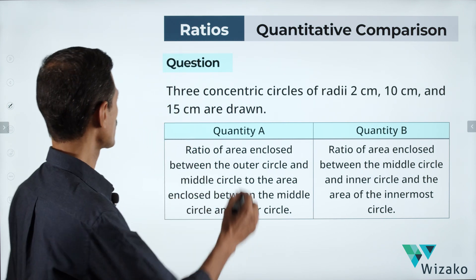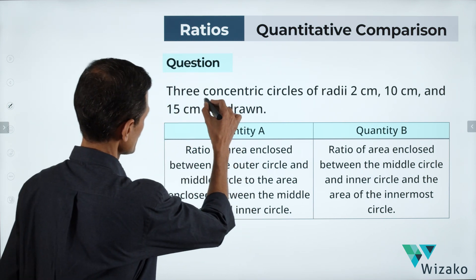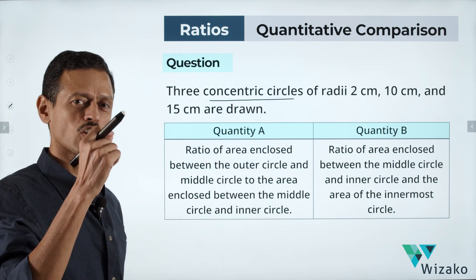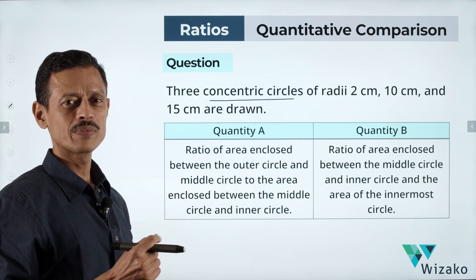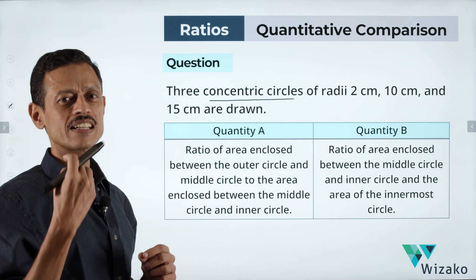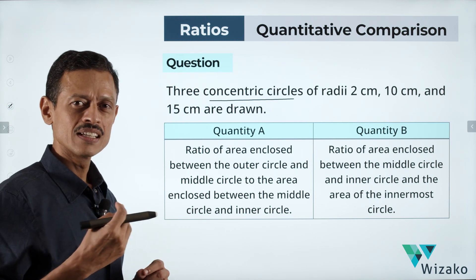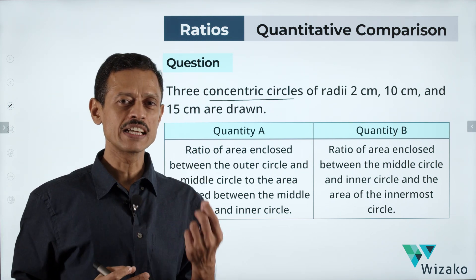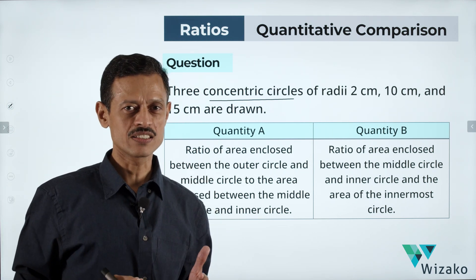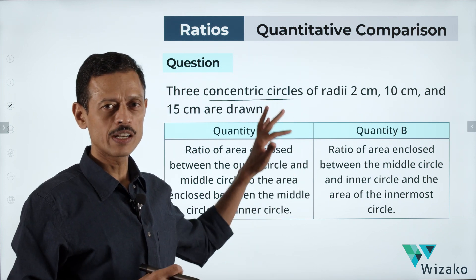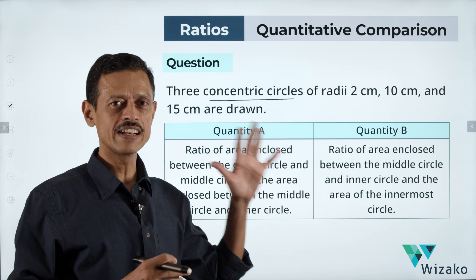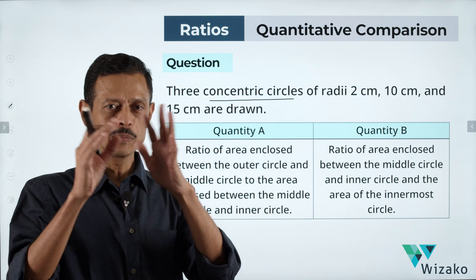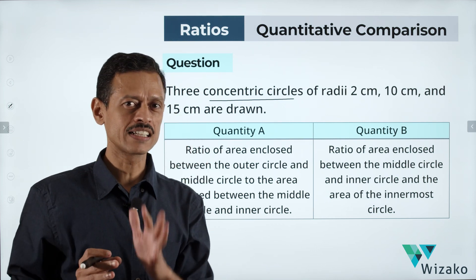Concentric circles are circles that have a common center but different radii. Think of a bullseye whenever you think of concentric circles. There's a diagram of what we'll be evaluating coming up in a couple of slides, so you'll be able to visualize it at that point.